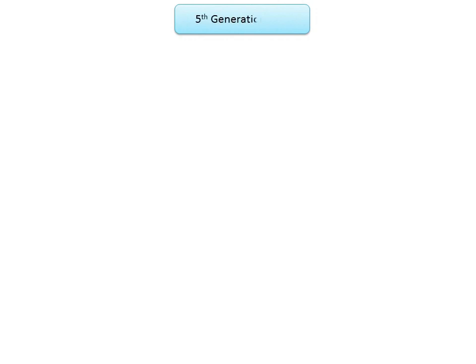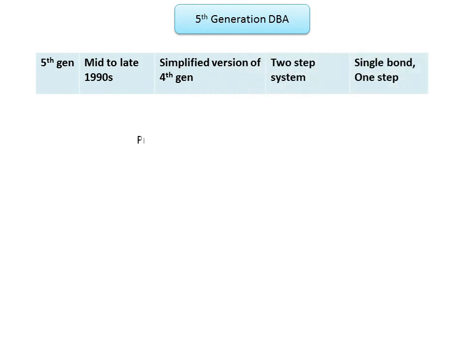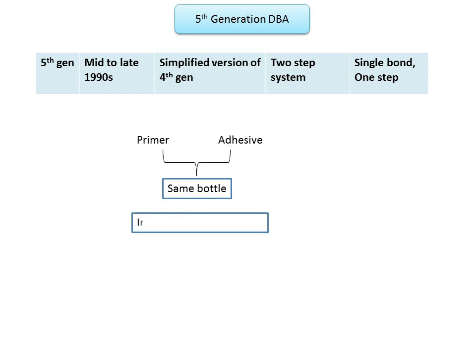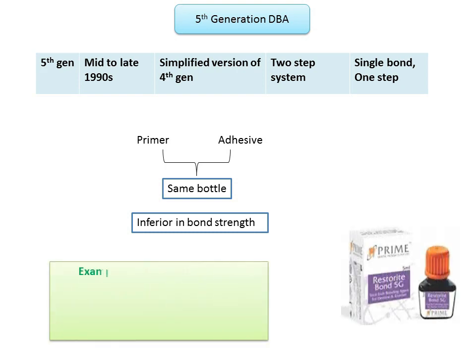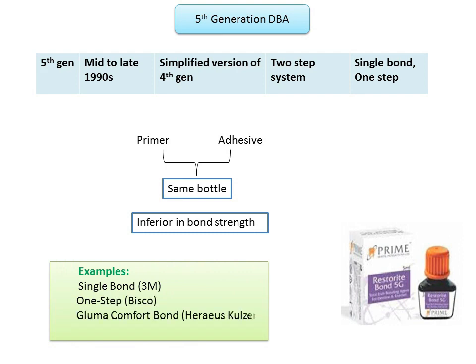Moving on to fifth generation dentine bonding agents, introduced in mid to late 1990s. These are a simplified version of fourth generation adhesives; the primer and adhesive are present in the same bottle rather than two separate bottles as in the fourth generation. Though they require fewer steps to achieve dentine bonding, these agents are inferior to fourth generation bonding agents in terms of bond strength. Examples include Single Bond by 3M, One Step by Bisco, Gluma Comfort Bond by Heraeus Kulzer, and OptiBond Solo by Kerr.